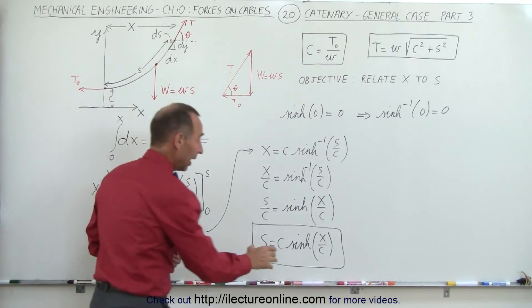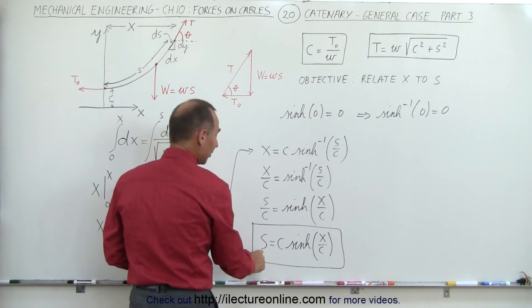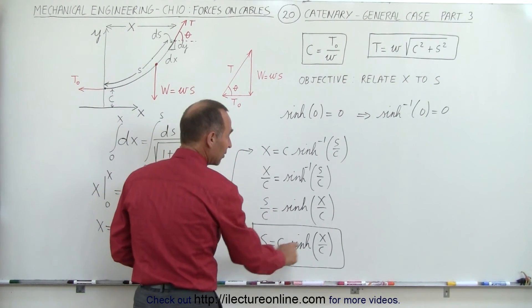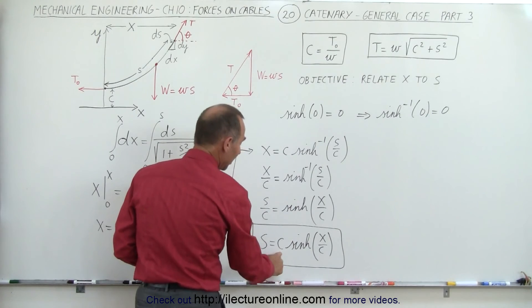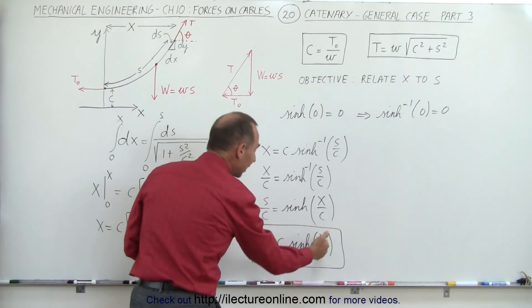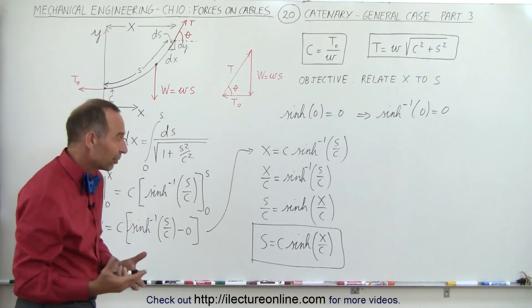If you know x and you know c you can find s. If you know s and know x you can find c. If you know c and s you can find x. In other words there's three variables there.